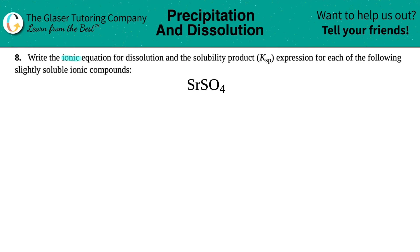Number eight, write the ionic equation for dissolution and the solubility product, which is the Ksp, write the expression for each of the following slightly soluble ionic compounds. And then we have strontium sulfate, SrSO4.